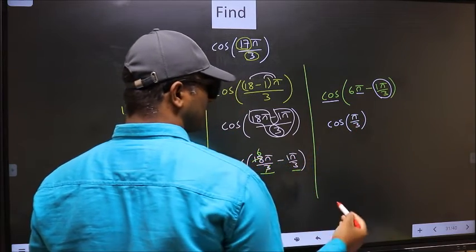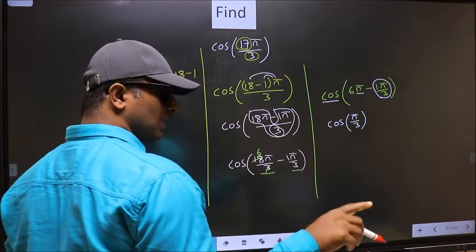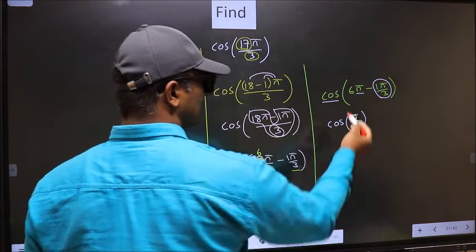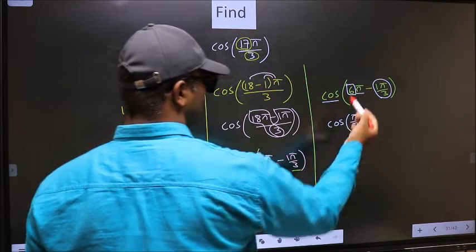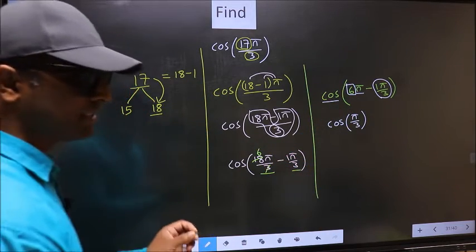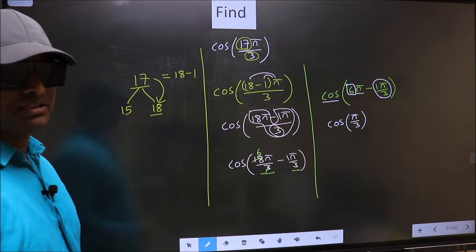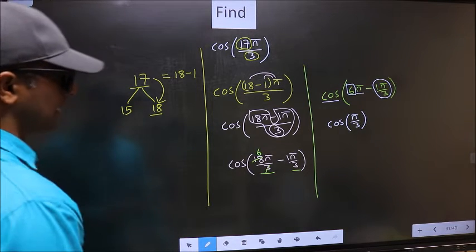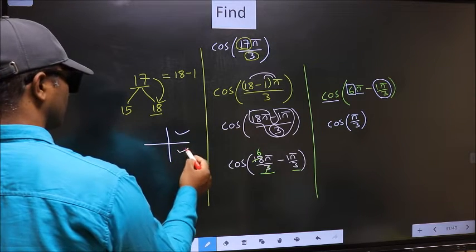Now the question arises, will we get here plus or minus? To answer that, you should look at the number before π, which is 6. And 6 is even. And all the even multiples of π, they lie under first or in the fourth quadrant.